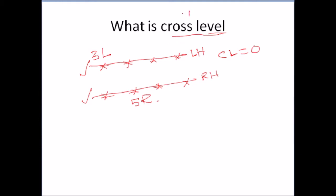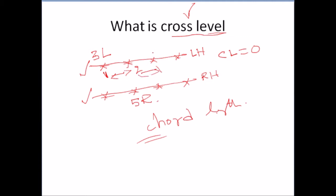Next, what is chord length? You will be measuring the cross level at different locations. This is station number one; after a particular distance you measure cross level at station two, and so on. That particular distance is called chord length. Generally it is taken as three meters — at every three meters you measure the cross level of the track.